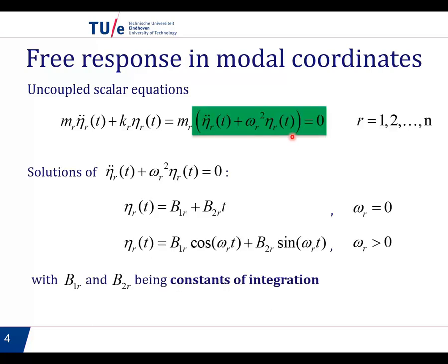The solution for this equation is as follows. If omega r is zero, then we simply have an integration constant plus another integration constant times t. And if omega r is not zero, we get a harmonic motion. So we get that eta is some constant times cos omega r t plus another constant times sin omega r t.